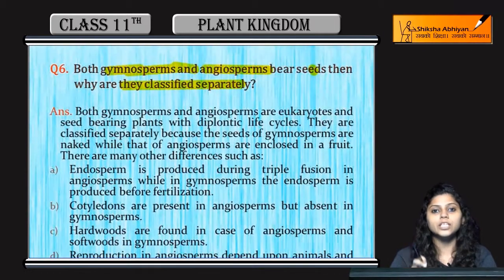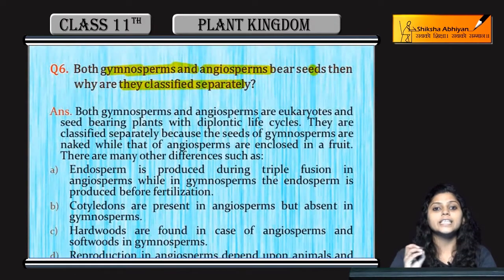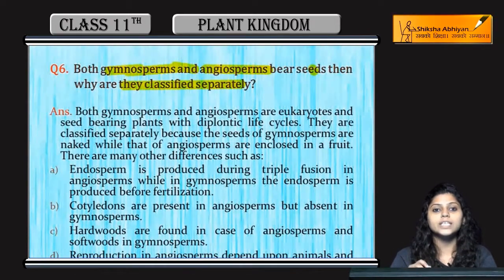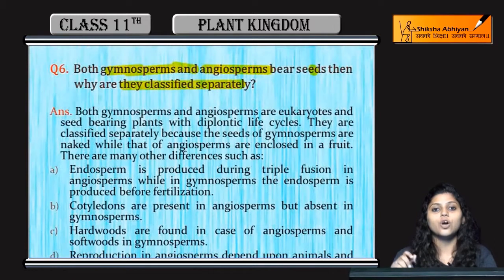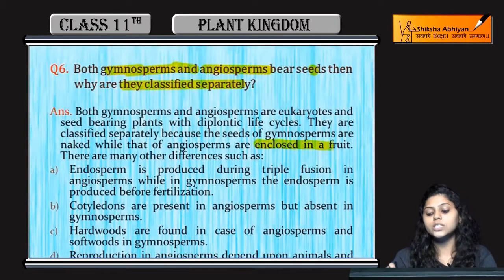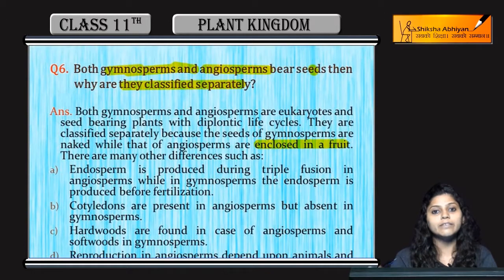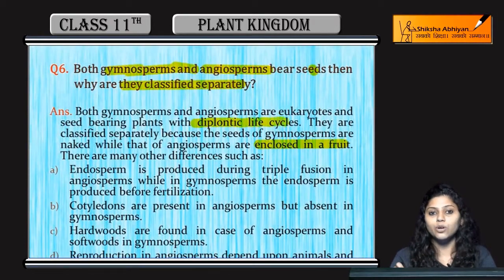सबसे main difference यह है: seeds तो होते हैं, लेकिन gymnosperms के seeds naked होते हैं, whereas angiosperms के seeds are enclosed in a fruit और enveloped होते हैं। दोनों की life cycle diplontic होती है।